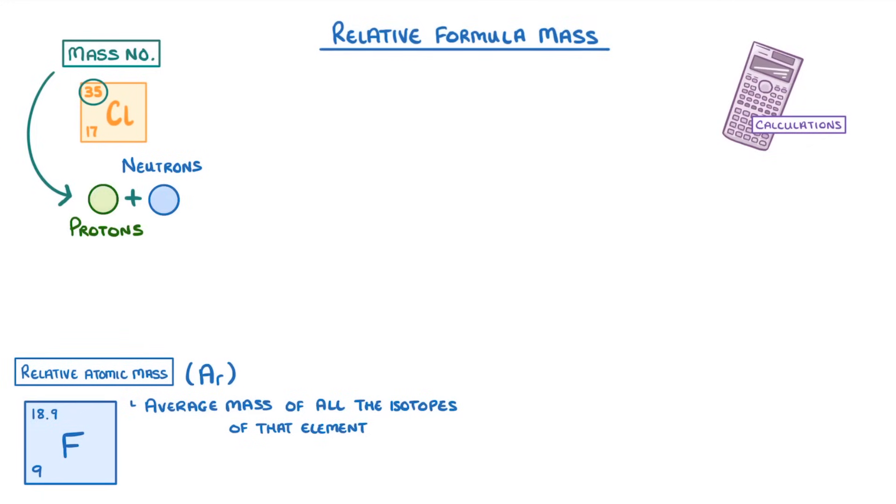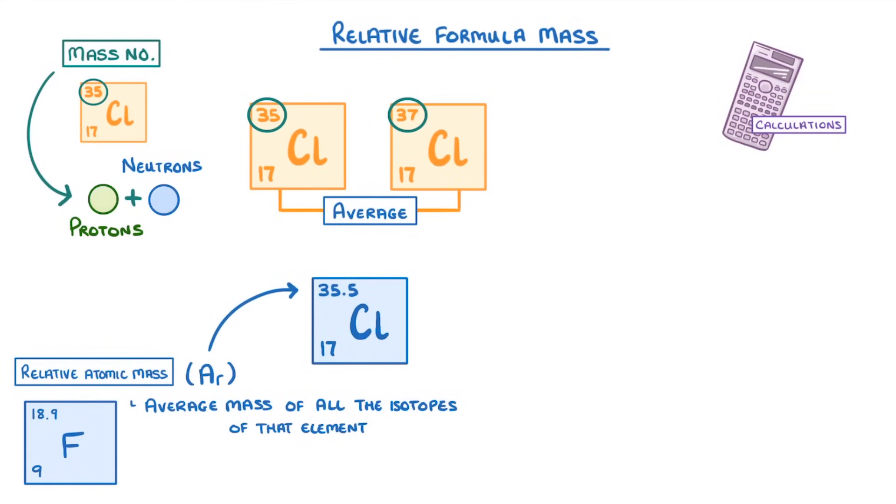So whereas particular chlorine atoms should have mass numbers of 35 or 37, chlorine as an element has a relative atomic mass of 35.5 because that's the average mass of these two isotopes when we consider how common each one is.